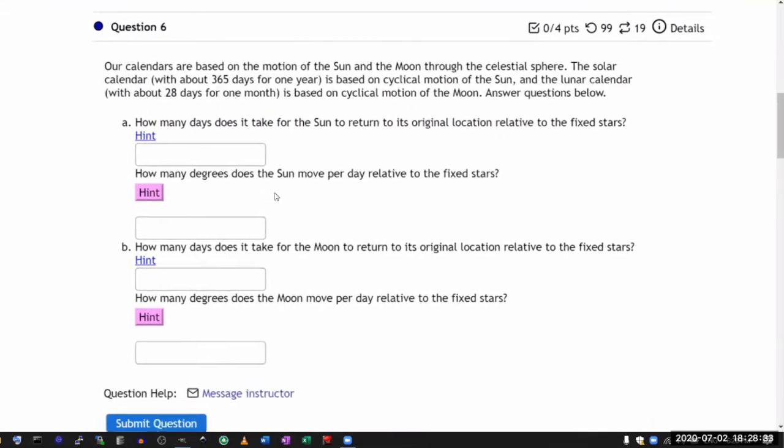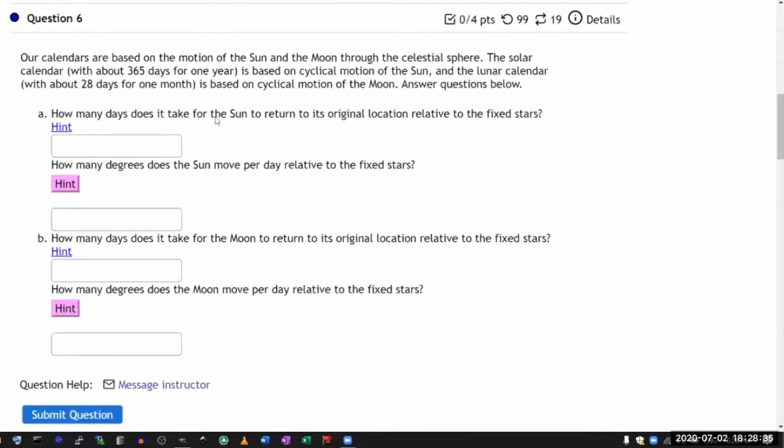So yeah, this is the question. Our calendars are based on the motion of the sun and the moon through the celestial sphere. The solar calendar with this many days is based on cyclical motions of the sun and the lunar calendar with about 28 days.